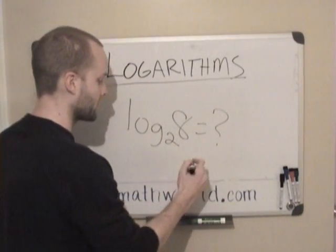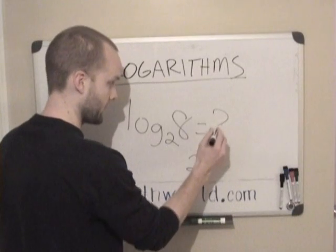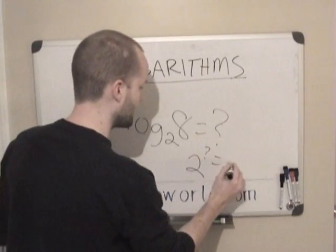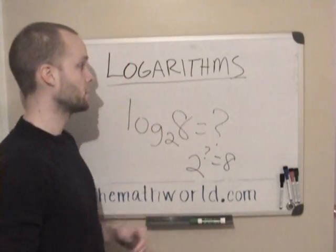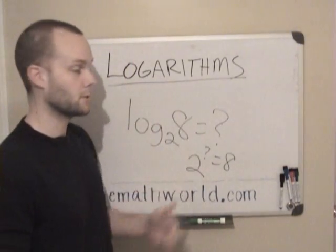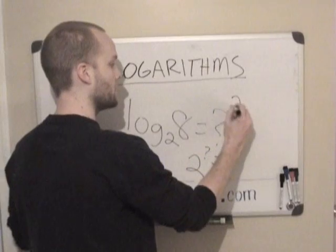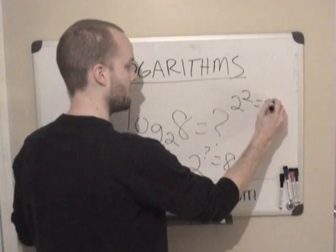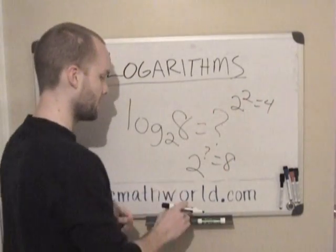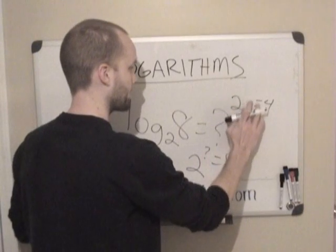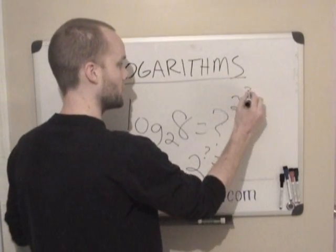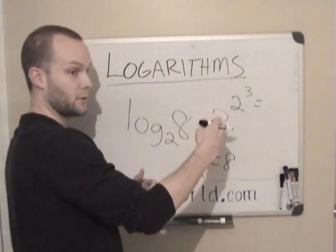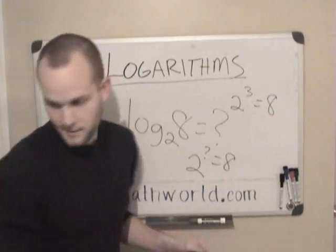Another way that you can actually write this is 2, whatever this is, question mark in this case, equals 8. And so one of the things that you need to know, to know logarithms, is you need to know your exponents. So you need to know that 2 squared is equal to 4. You need to know what this number up top is. You need to know that 2 to the third power means 2 times 2 times 2, which is 8.